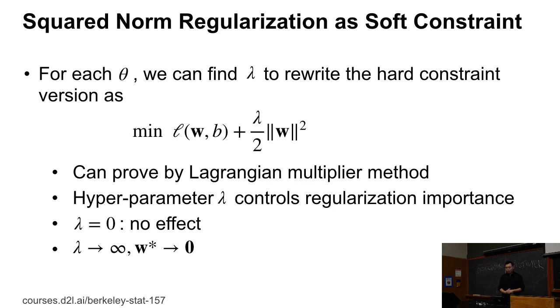Which means for each θ, we can find a corresponding λ so that we can rewrite the hard-constraint version as the following: minimize ℓ(w, b) plus λ/2 times ||w||², the squared L2 norm of w.